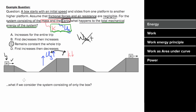Now, what if we ask this same question but consider a system that consists only of the box? In that case, our system has a box that's moving, so it'll have kinetic energy. But our system no longer includes two objects interacting gravitationally, so our system will have no gravitational potential energy. The only energy in my system is kinetic energy, and since that kinetic energy decreased, the total mechanical energy of the box as a system decreases.